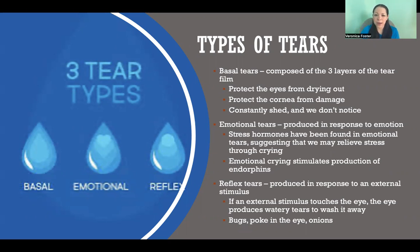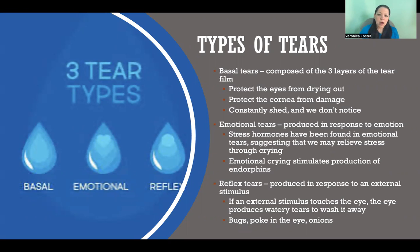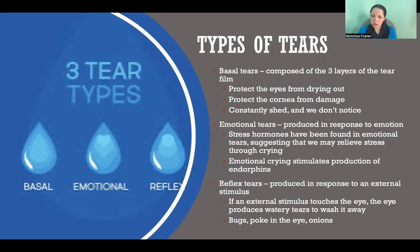Basal tears are made up of the three layers that form the tear film. They are the lubrication that is present on your eyes all the time, so they're constantly shed. We don't even notice them, assuming everything is working correctly and we're producing enough. Those basal tears protect our eyes from drying out, and they also protect the cornea from being damaged or the conjunctiva from becoming infected.